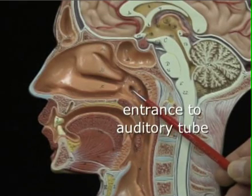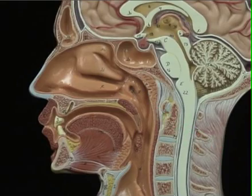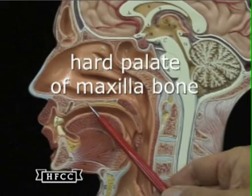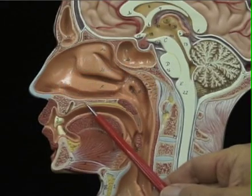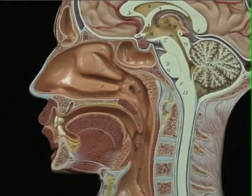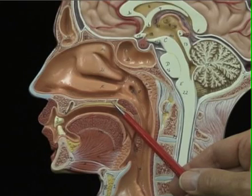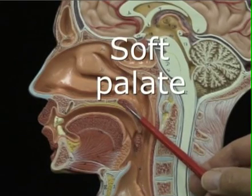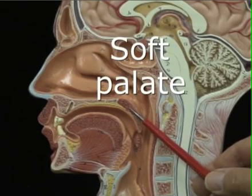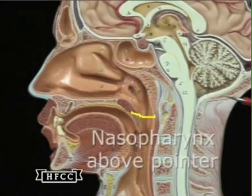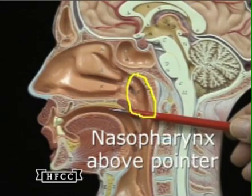This hole here is an opening to the auditory tube that goes up into the middle ear. The hard palate, or the hard roof of the mouth, is part of the maxilla. And then there's a small bone called the palatine bone, posterior to the hard palate — it's also part of the hard palate. The soft palate here is musculature with soft tissue on the posterior roof of the mouth. And then the uvula, a hanging structure you can see when you look into your open mouth in a mirror.